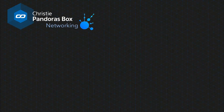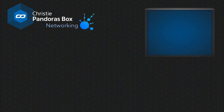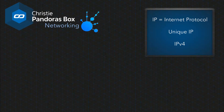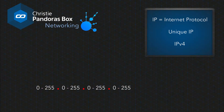Let's start by talking about how machines communicate in a network. IP is an acronym that stands for Internet Protocol. Every machine in the network is assigned a unique IP address, comparable to phone numbers in a telephone network. While there are two versions — IPv4 and IPv6 — we will only be talking about version 4, which Pandora's Box uses. An IP address consists of four numbers ranging from 0 to 255, separated by a dot.